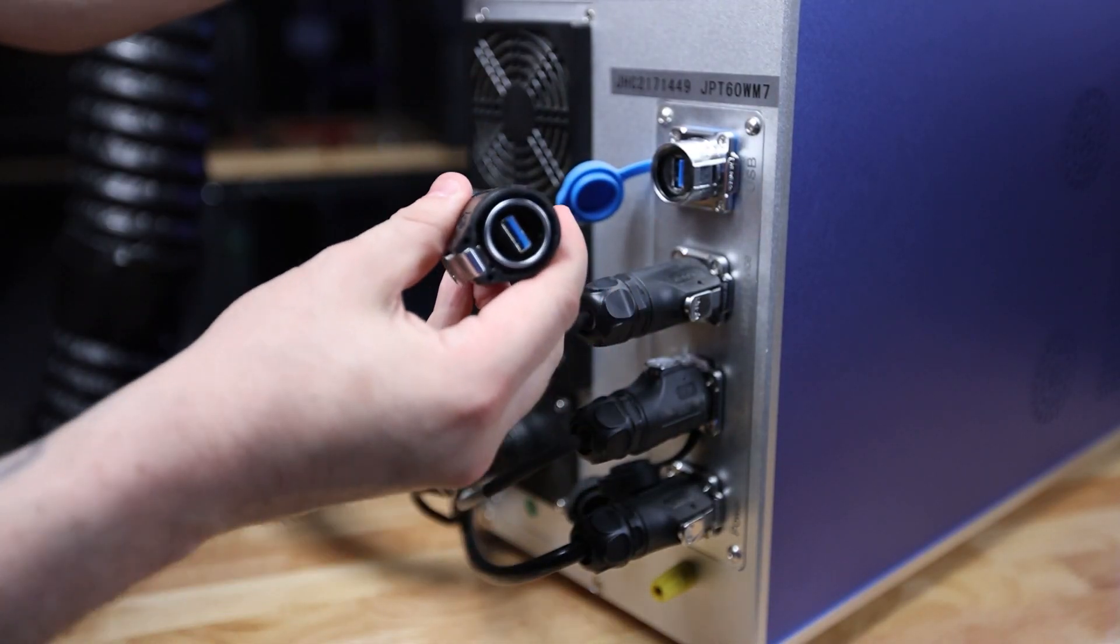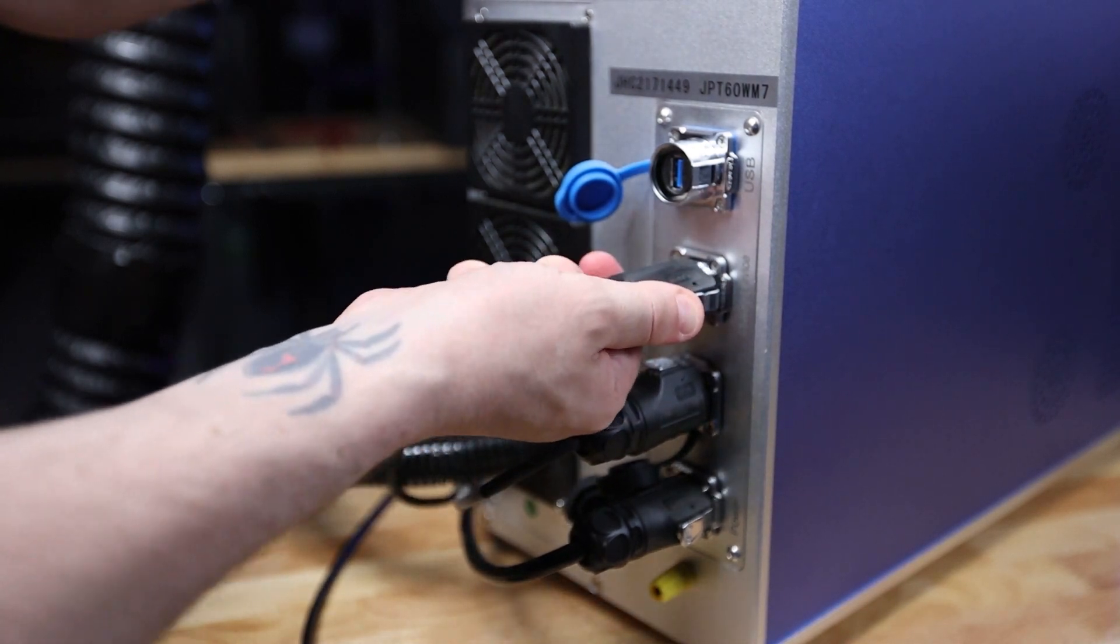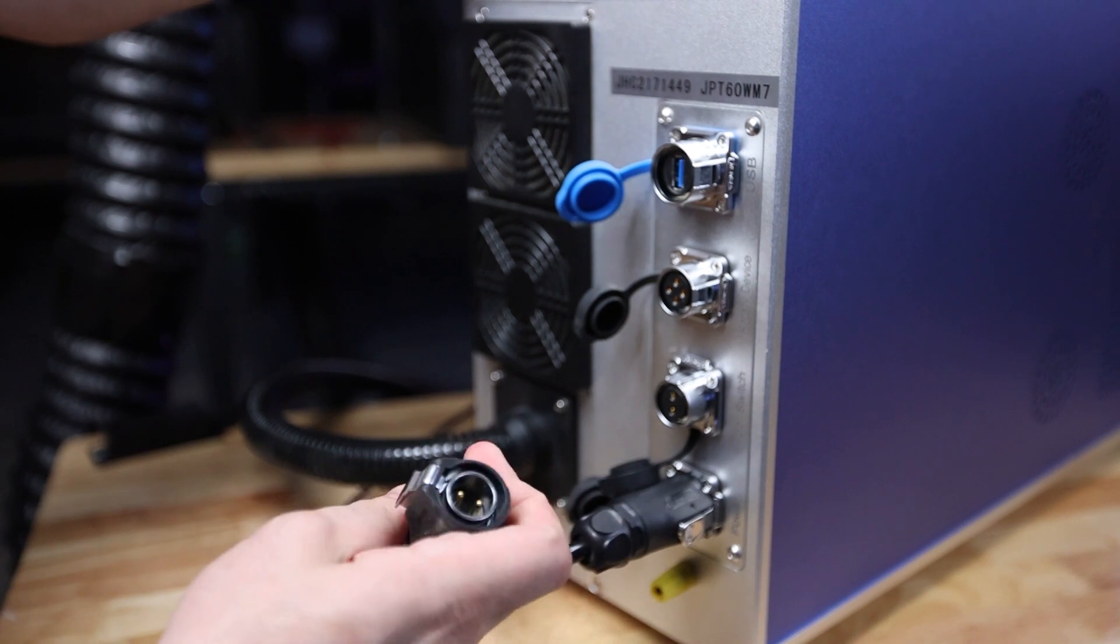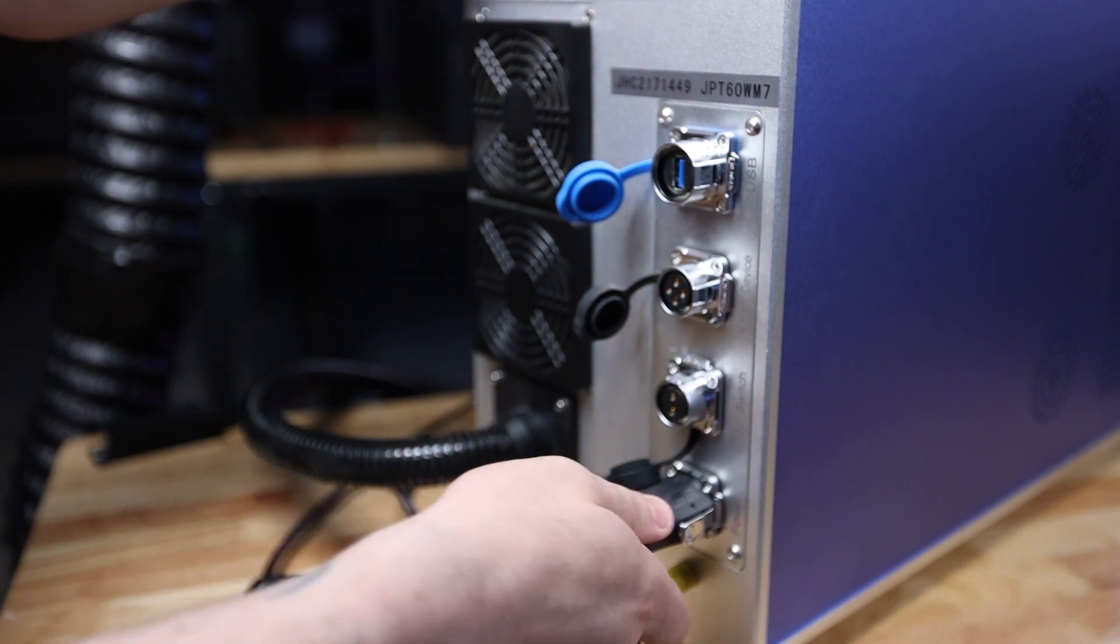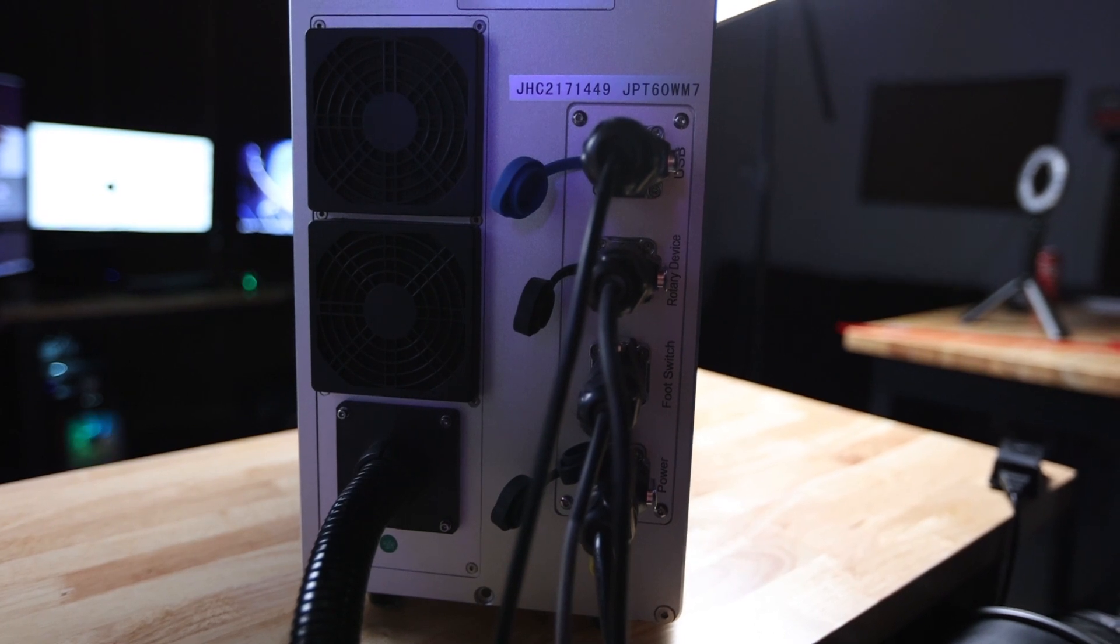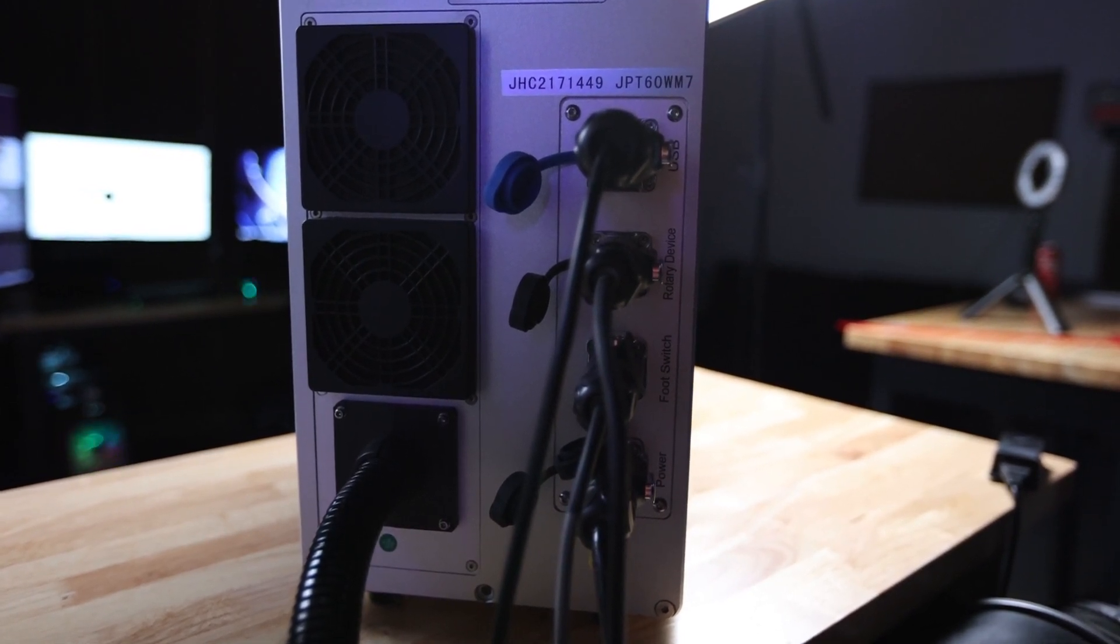The connection ports on the back of the machine are standard but feature extra clip type mounts that lock the connections with a satisfying snap. A very nice addition so they won't get knocked out or loosen over time. The connecting cables themselves feature the thickest heavy duty rubber wires that are definitely primed for taking a beating.